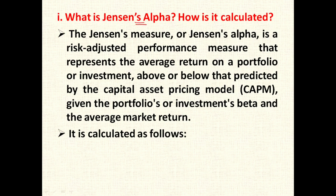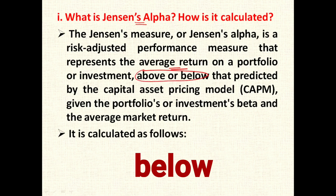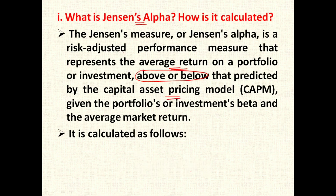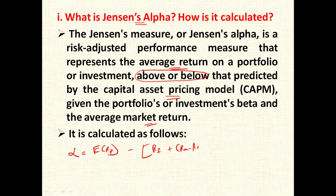The next question: what is Jensen's alpha and how is it calculated? Jensen's alpha is a risk-adjusted performance measure that represents the average return on a portfolio over and above that predicted by the CAPM model, given the portfolio's beta and the average market return. Jensen's alpha equals the actual portfolio return minus the expected return from CAPM, i.e., RF plus (RM minus RF) multiplied by beta.